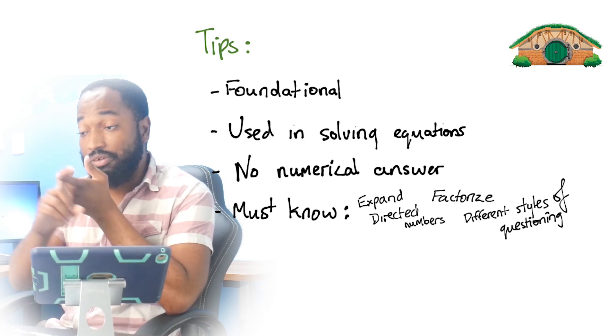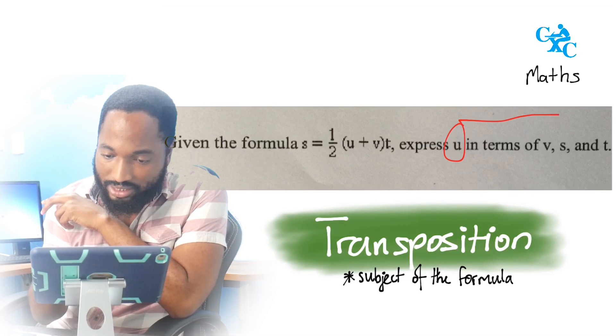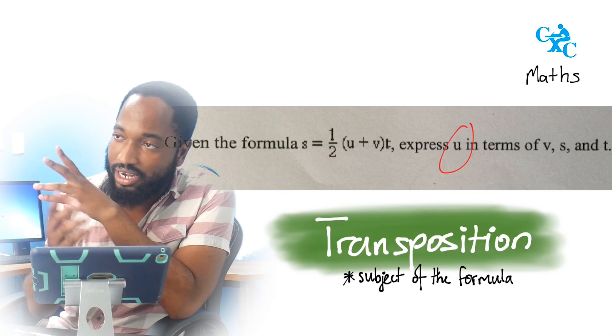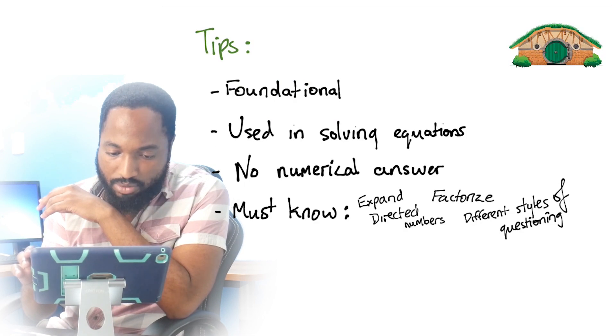So sometimes they'll ask you to find the subject of the formula. Or sometimes they'll ask you to express, I think this question, the starting question, express U in terms of V, S, and T. You see? Like that. So this means make U the subject of the formula. That's what they mean there. So you need to know how to do that.